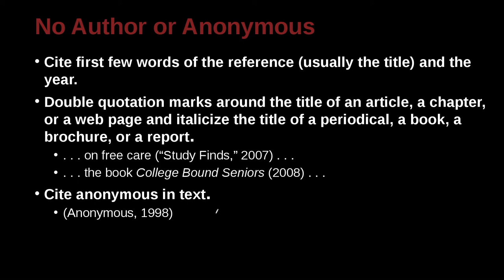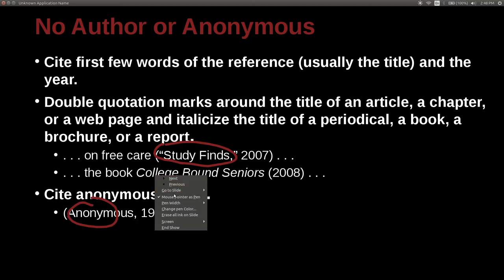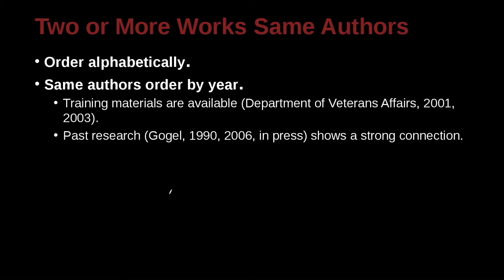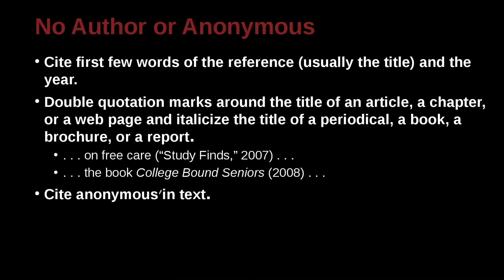If you're writing your citations and you want to cite inside the text, you can also just use the word 'anonymous.' So you can use the first-few-words approach, or you can just say it's anonymous. When you do it that way, you format it the same way as before: the name, then a comma, then the date. Anonymous is not a person we know, but it works the same way.